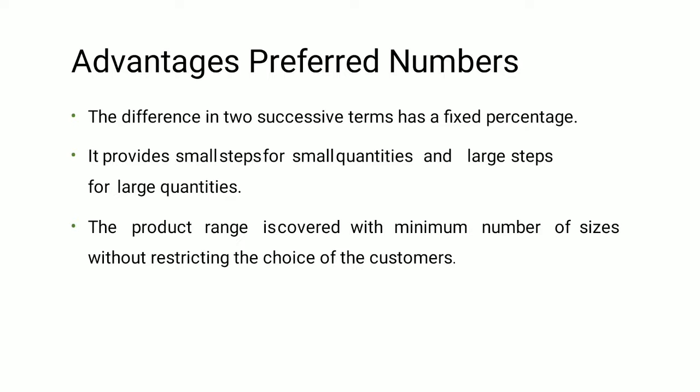Whenever small quantities are involved, there will be a small difference between terms; for large quantities, there will be a large difference. The difference between any two successive terms has a fixed percentage — this is the key advantage of the preferred number series. Standard shaft diameters can be found using this preferred number series.